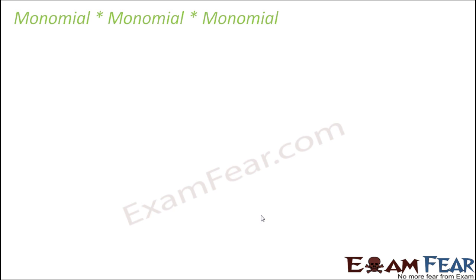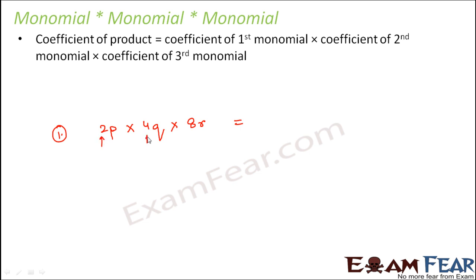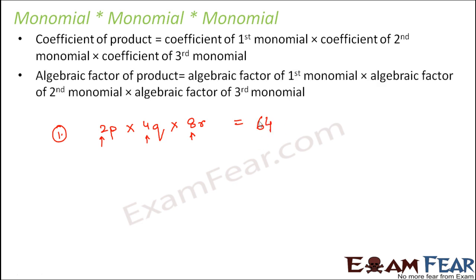Now what if instead of two monomials we have three monomials? The concept is the same. To find the coefficient of the product, find the product of all coefficients of the three monomials. For example: 2p into 4q into 8r. Multiplying all coefficients: 2 into 4 into 8 gives 64. So 64 becomes the coefficient of the product.